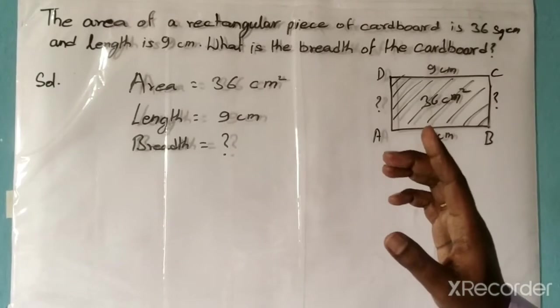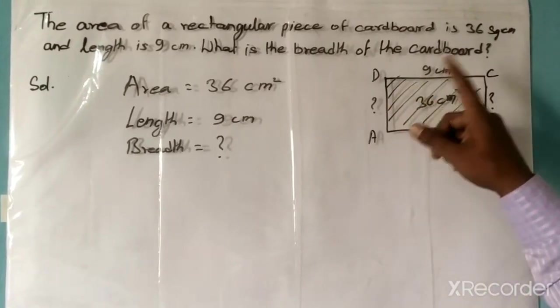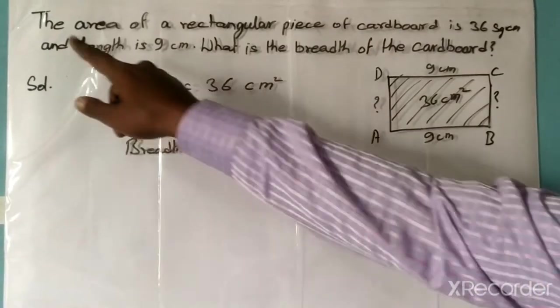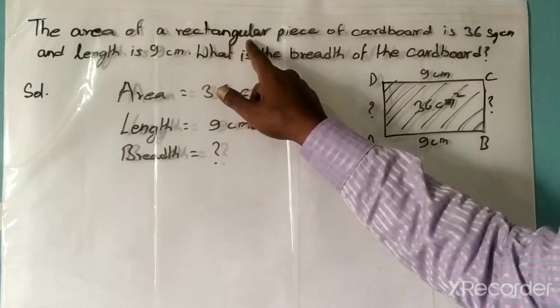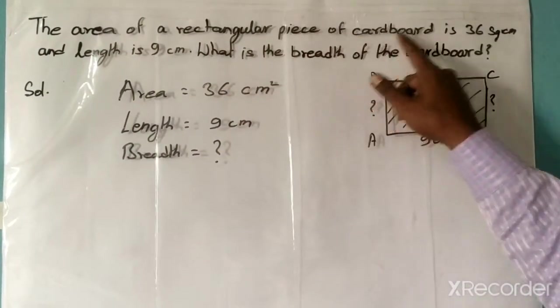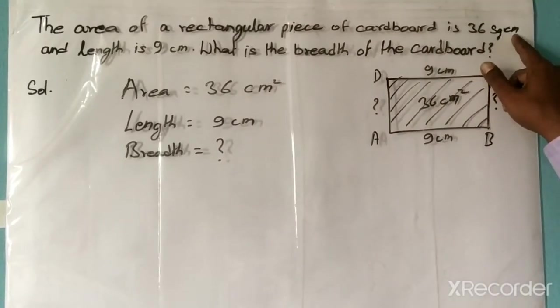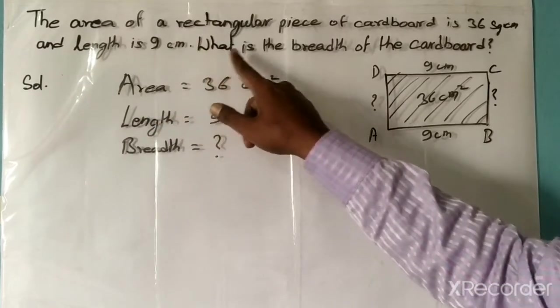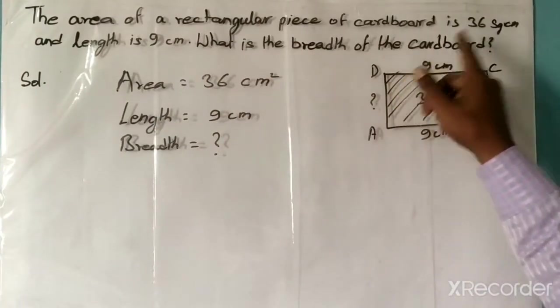Today we will solve a problem related to the area of a rectangle. The question is: the area of a rectangular piece of cardboard is 36 square centimeters and length is 9 centimeters. What is the breadth of the cardboard?